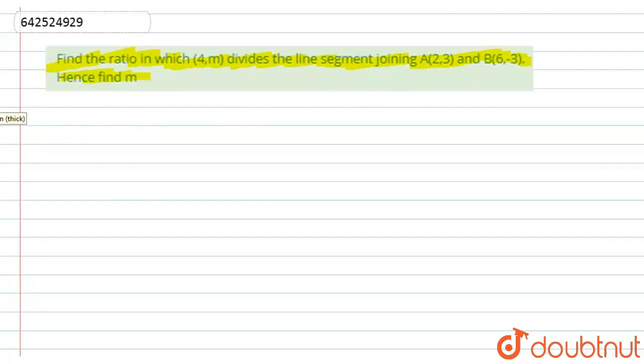So, let's start with this solution. First of all, what is given to us? We have given the two points. So, let this be the line segment AB with the coordinates (2,3) and (6,-3). Now, let this point be x1,y1 and this point as x2,y2.